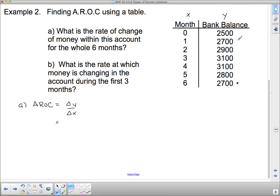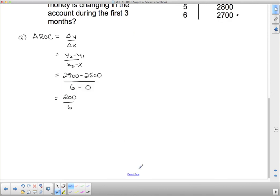So we want to take the change in y over the change in x for the whole six months. So I have to do y₂ minus y₁ over x₂ minus x₁. So in this case, it's going to be 2700 minus 2500 divided by 6 minus 0. So 2700 minus 2500 is 200 divided by 6. And that's going to be 33.33. And since this is a bank balance, that's dollars per month.